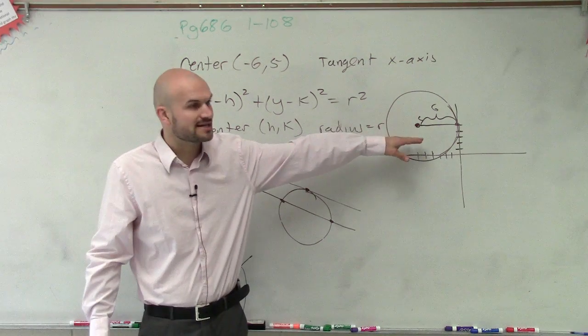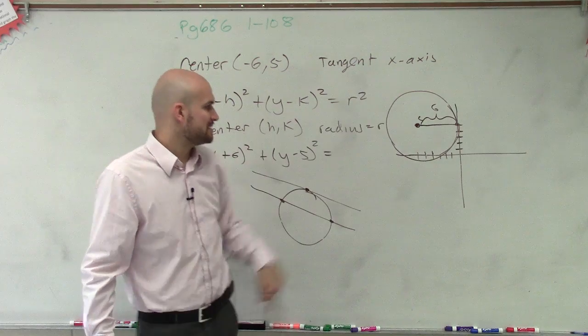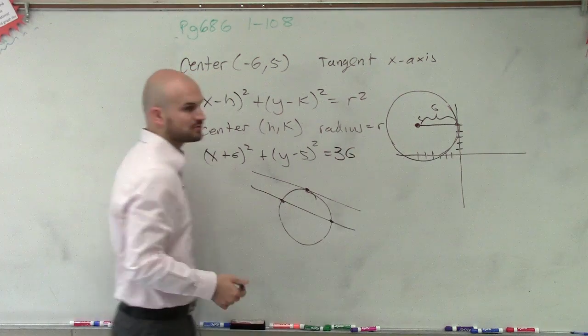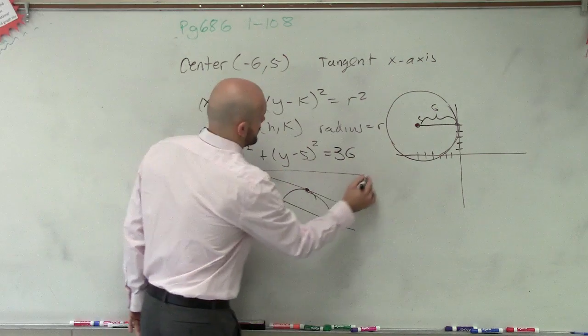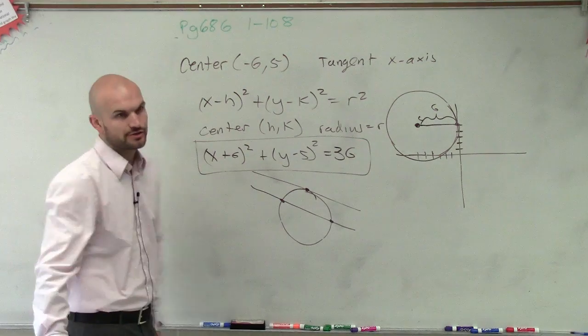So since this is tangent at the x-axis, it touches at the one point. That means that distance is 6. Therefore, 6 squared equals 36. And that's your equation of your circle.